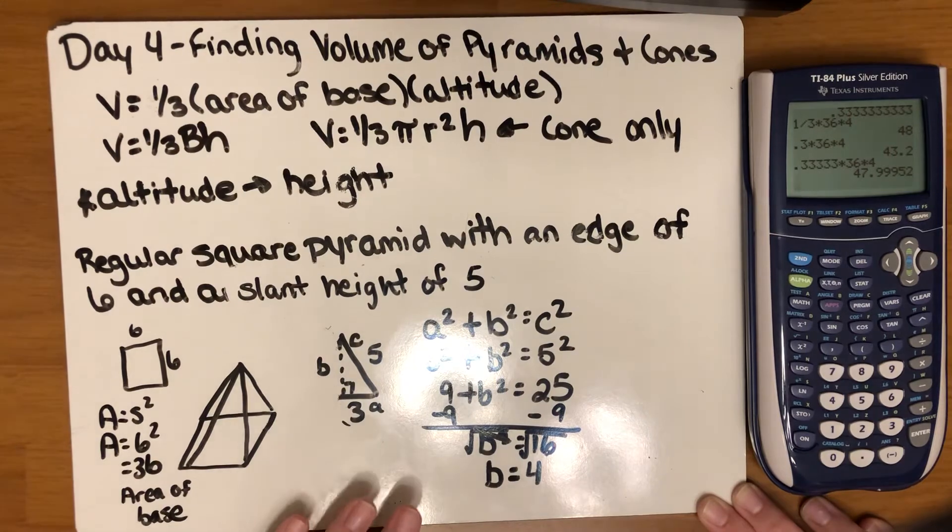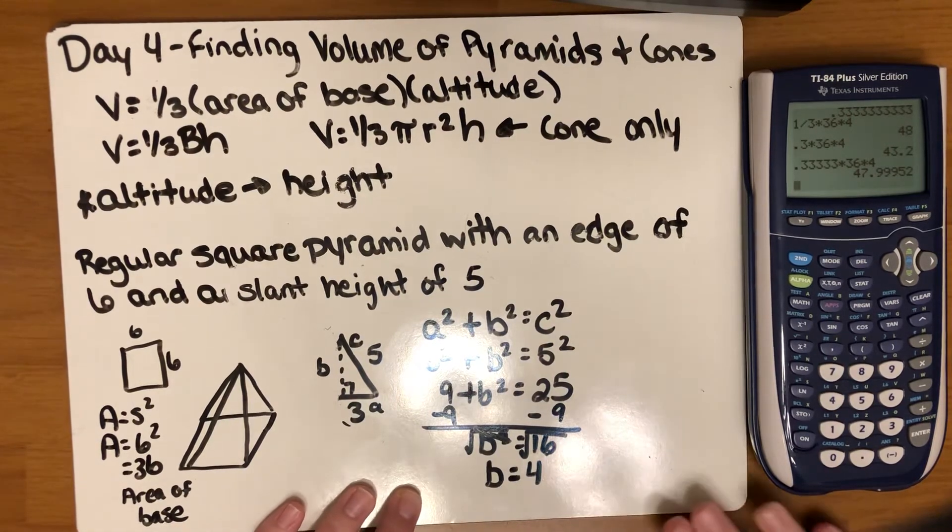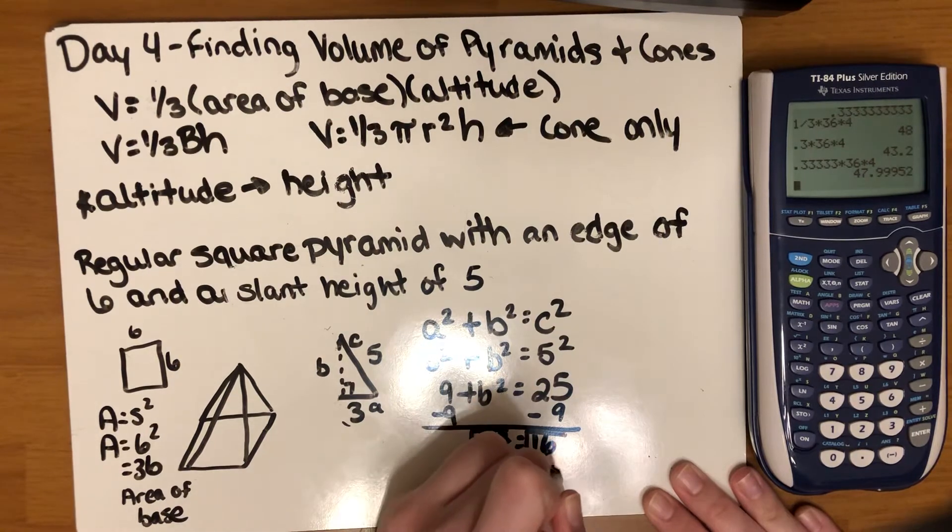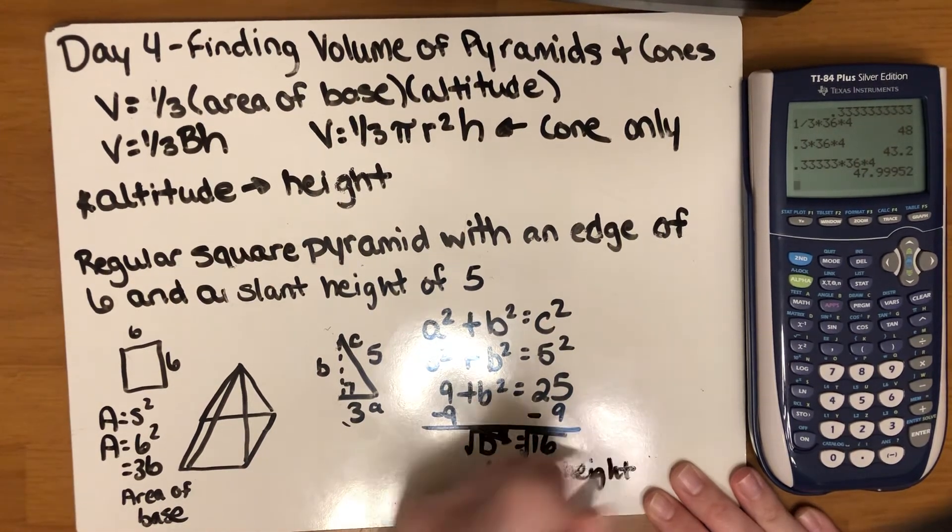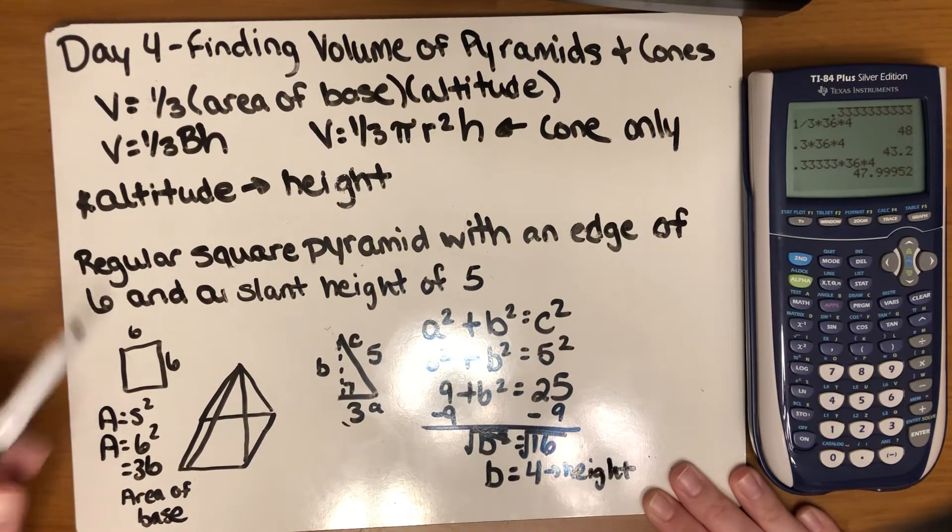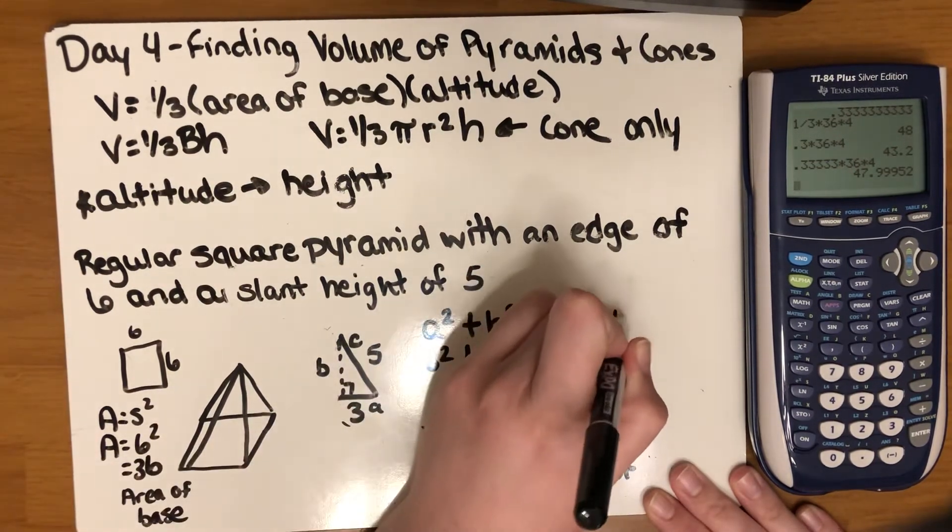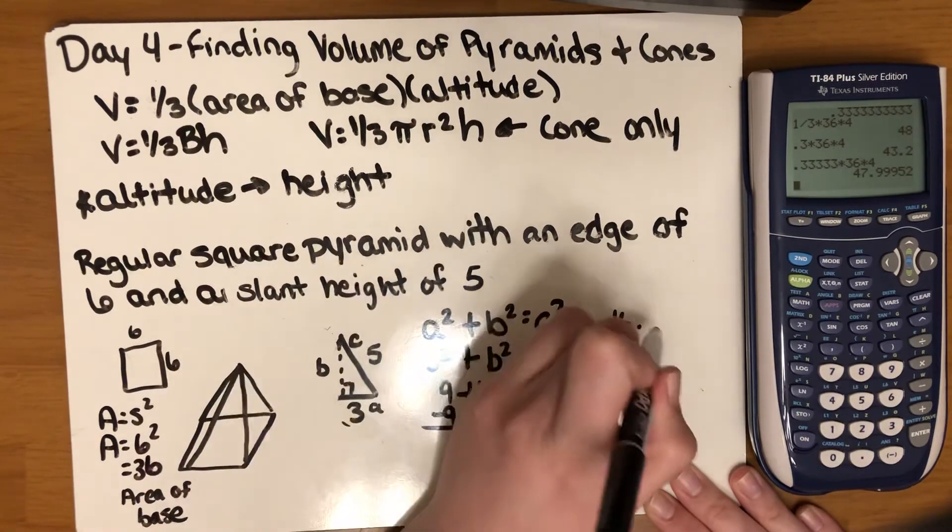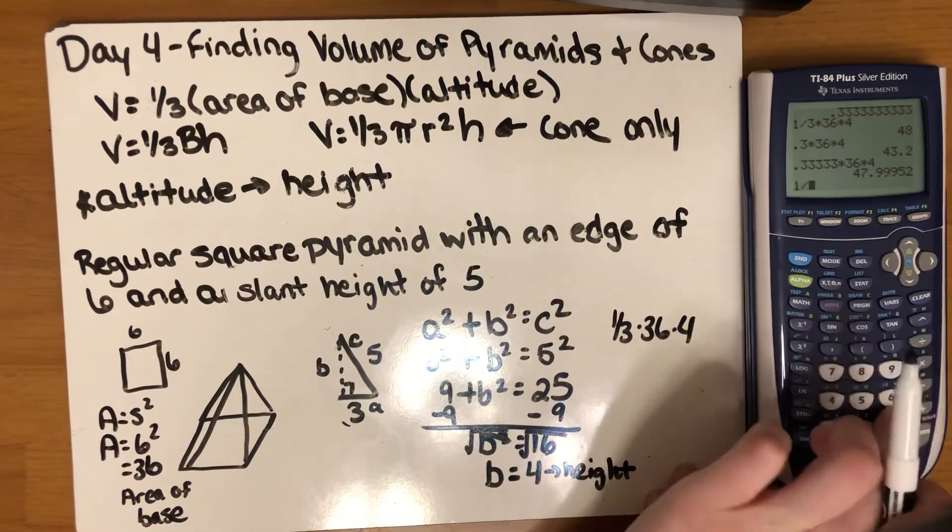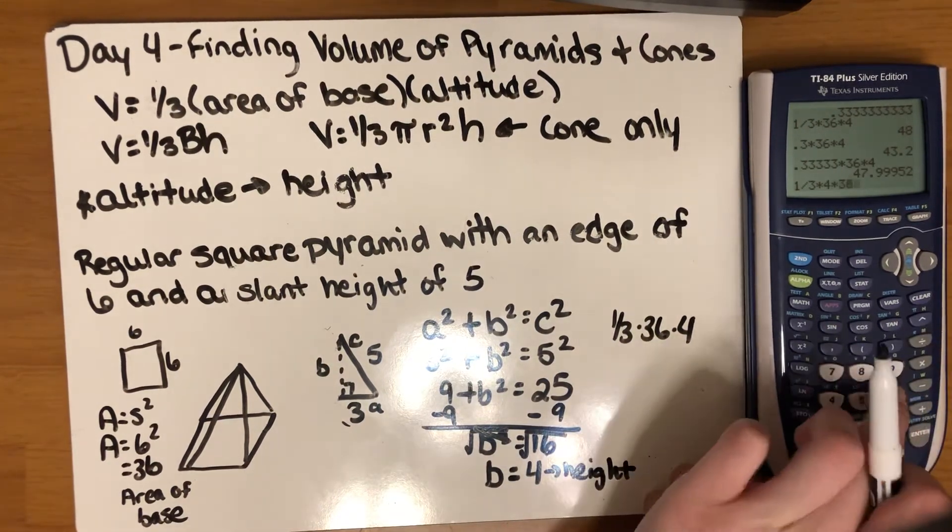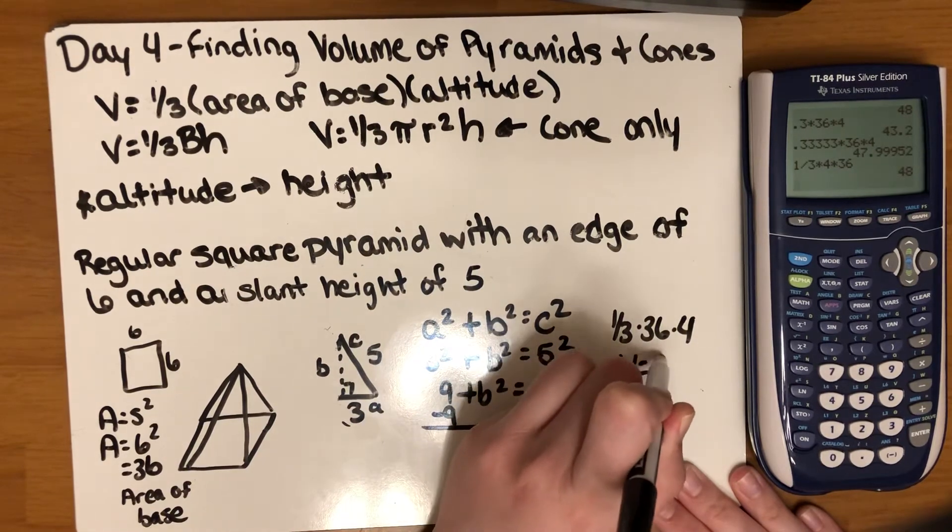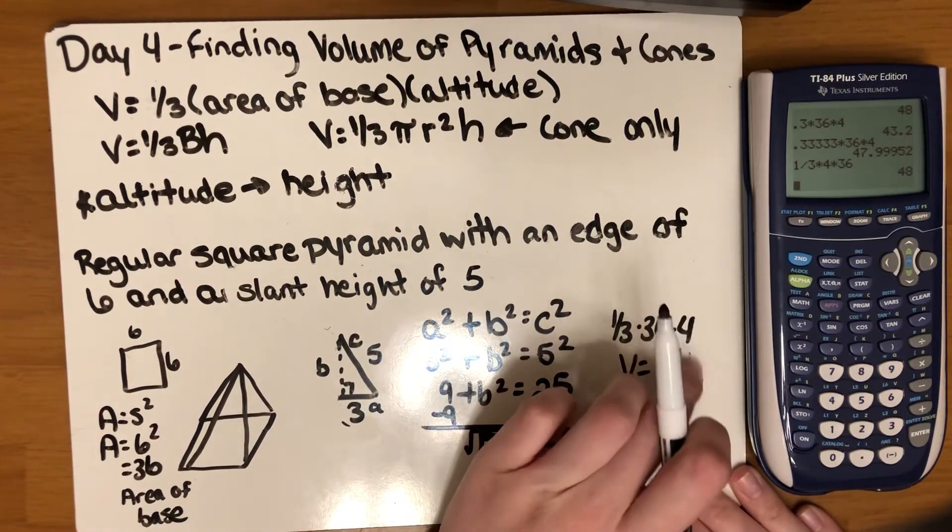For our problem we still are not quite finished yet. I need to continue on here. Now I know that this is the height of my pyramid. I found earlier that the area of the base was 36. So I'm going to go back up to my formula and do 1/3 times 36 times 4 which gives us 48. So the volume for this one is 48.